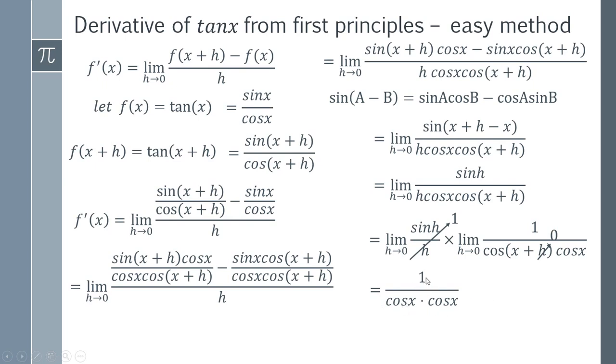Cos times cos is simply going to be cosine squared. And one over cosine squared is simply going to be secant squared. So we have proved from first principles that the derivative of tan x is secant squared.